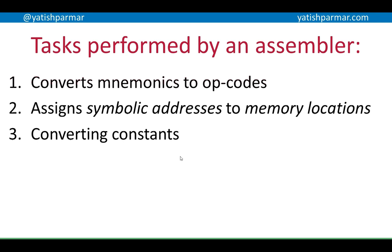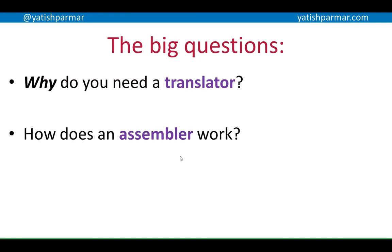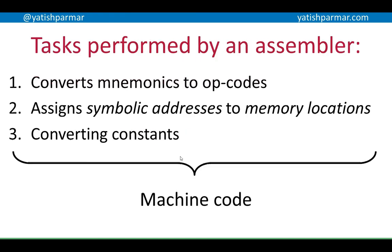Finally, the assembler takes your constants and converts them into binary form — so any decimal integer, any hex code, or any textual data (for example ASCII characters) would be converted to their numeric format in binary. Once all that's put together, you've got machine code that can be executed on a particular CPU. Remember that different CPU architectures have different instruction sets and therefore have their own translator.